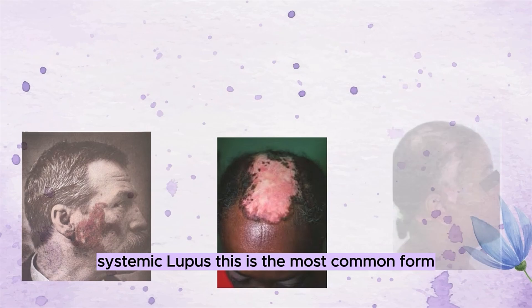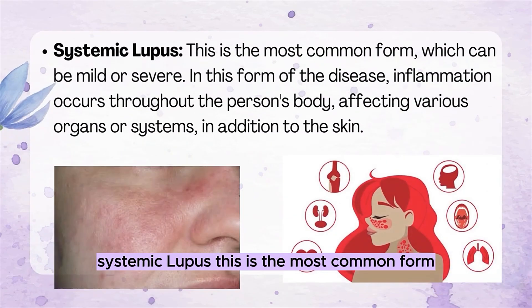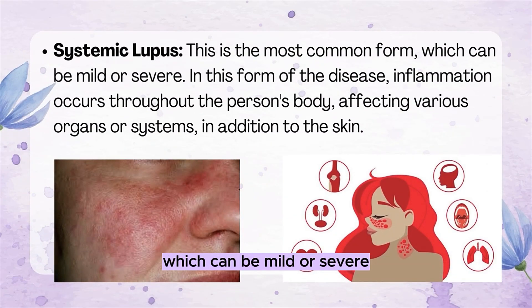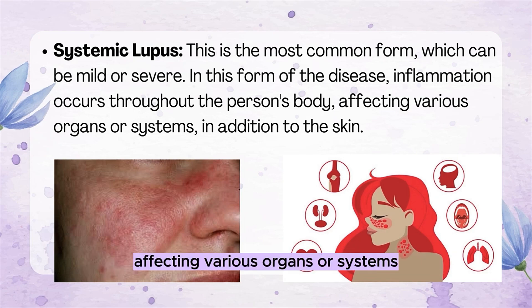Systemic Lupus: This is the most common form, which can be mild or severe. In this form of the disease, inflammation occurs throughout the person's body, affecting various organs or systems in addition to the skin.